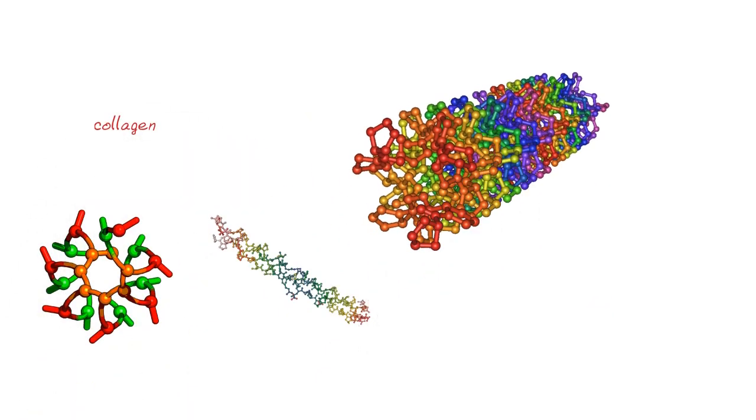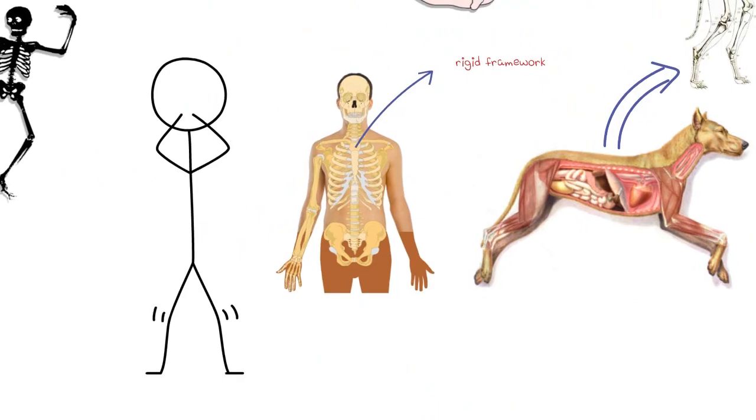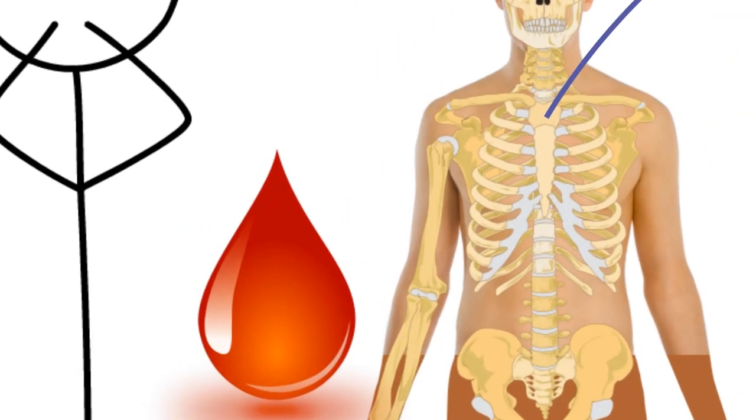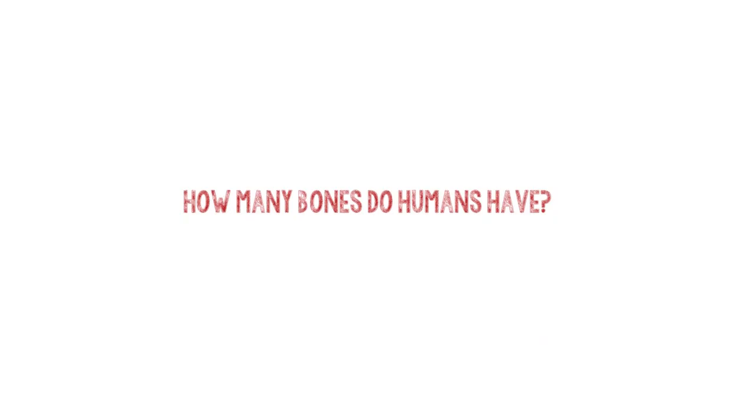Absolutely. Made mostly of collagen, bone is living, growing tissue. Collagen is a protein that provides a soft framework, and calcium phosphate is a mineral that adds strength and hardens the framework. This combination of collagen and calcium makes bones strong and flexible enough to withstand stress. Like other cells in your body, the bone cells rely on blood to keep them alive. Blood brings them food and oxygen and takes away waste.